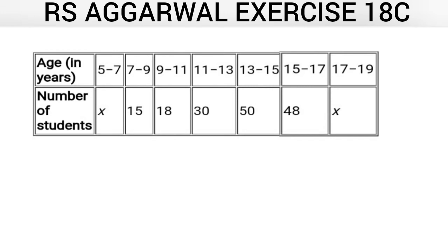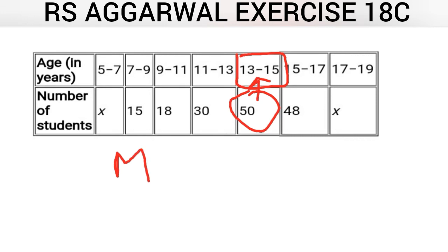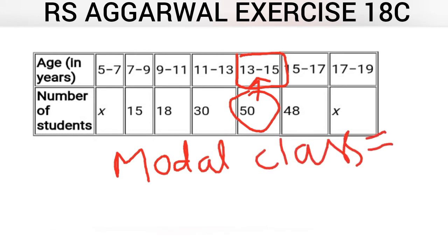In order to find the value of mode, first of all we have to recognize the modal class. We have to find out which one is our modal class. We look at which class has the maximum frequency — the class corresponding to the maximum frequency is our modal class. Here 50 is the highest frequency, and the class corresponding to 50 is 13 to 15. So the modal class is 13 to 15.